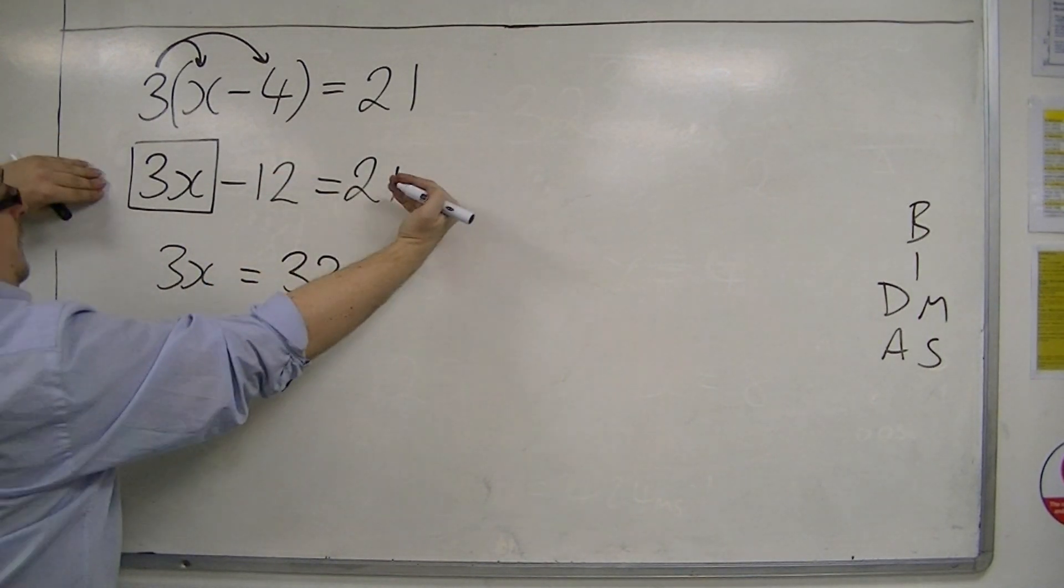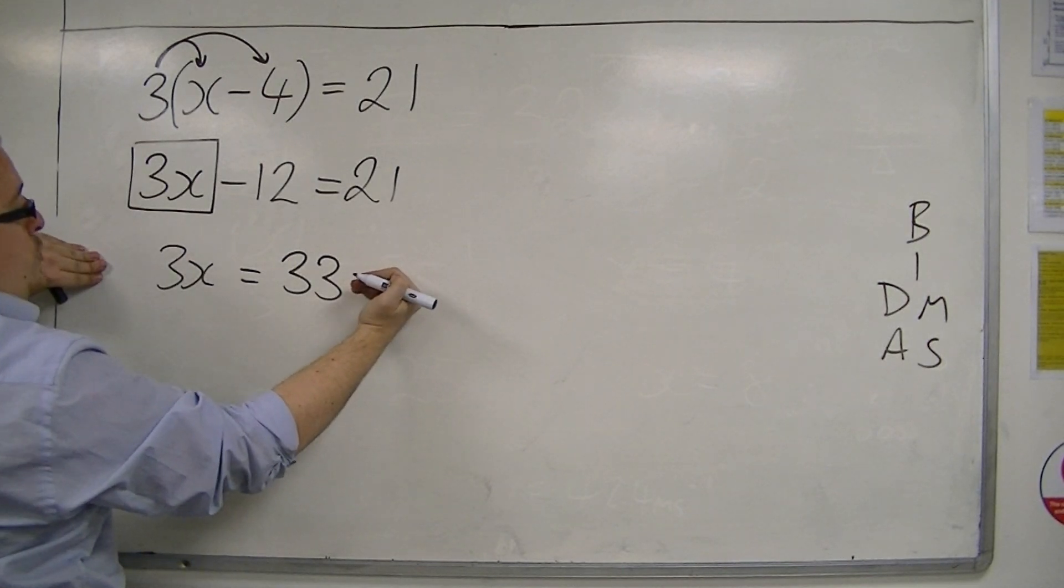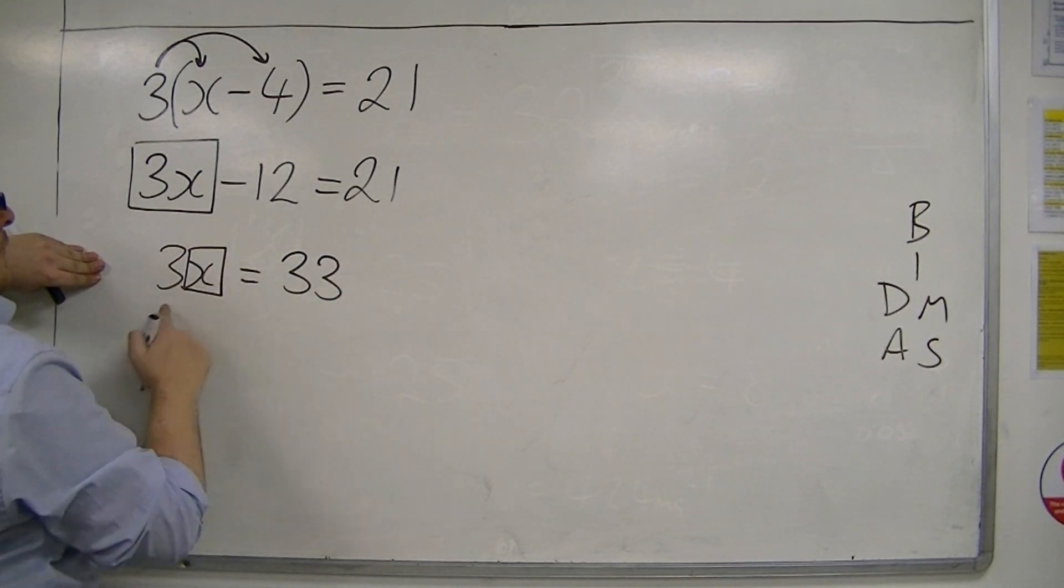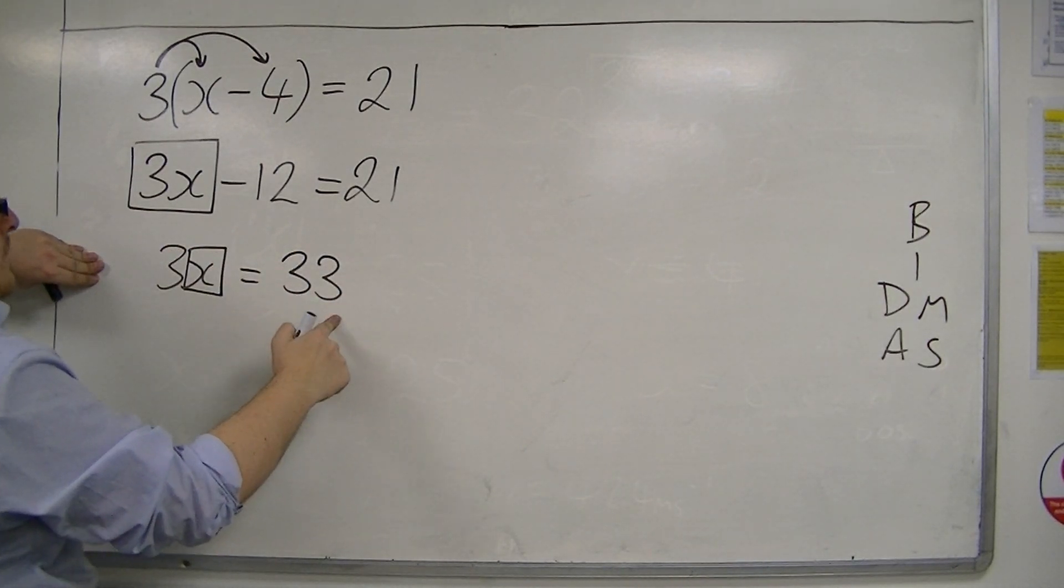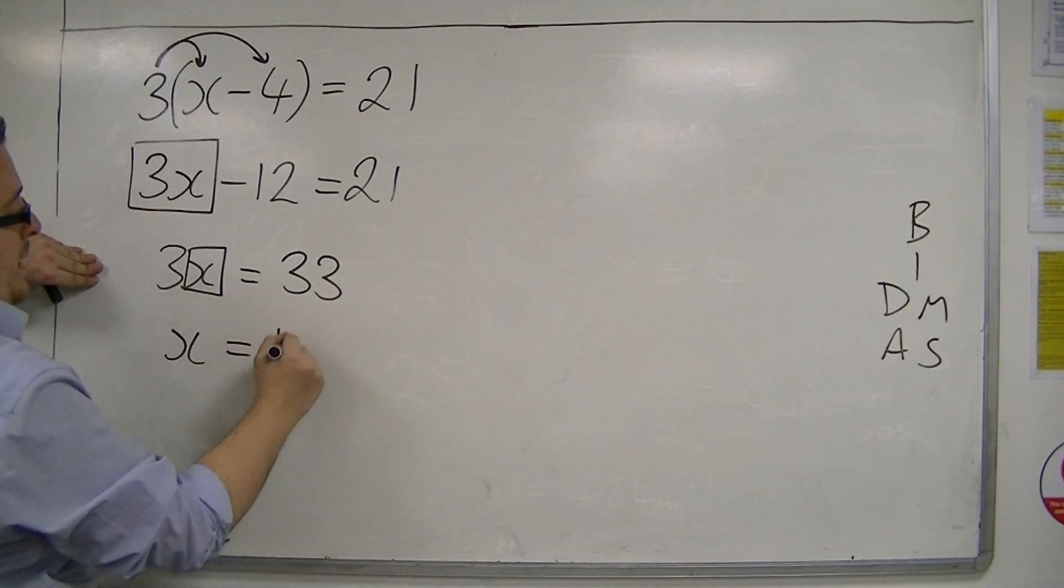This has reduced the two-step equation to a one-step equation. So that three lots of something is thirty-three, so the something must be eleven.